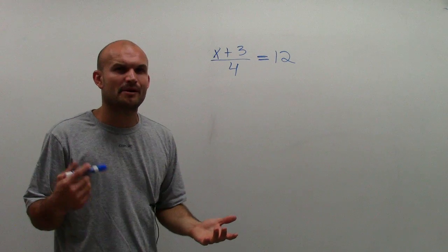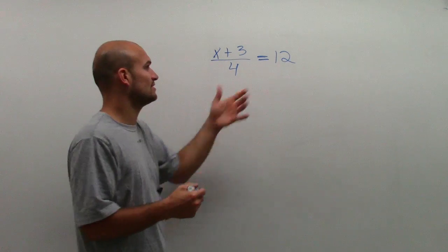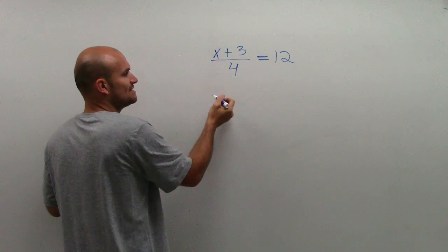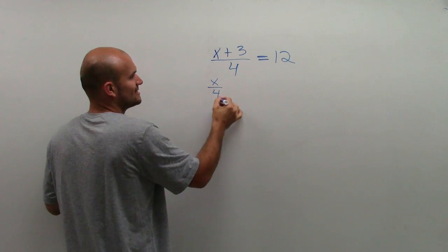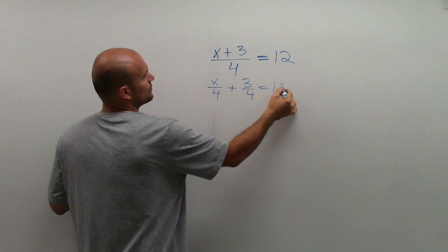And so you'd say, oh, OK, well, if it's 3 divided by 4, then I'd subtract 3 fourths. And you're right. Let me show you how we can rewrite this. Look, x is being divided by 4, as well as 3 is being divided by 4. So I can rewrite this as x divided by 4 plus 3 divided by 4 equals 12.